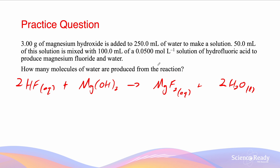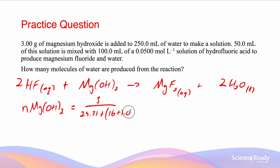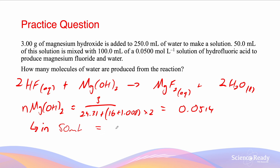We now try to identify our limiting reagent. For magnesium hydroxide we are given mass and volume, and our goal is to calculate how many moles are in the 50 millilitre solution. The number of moles of Mg(OH)₂ equals 3 divided by 24.31 plus (16 plus 1.008) times 2, which equals 0.0514 moles. Since we are only taking one-fifth of the 250 millilitre solution, the number of moles in 50 millilitres equals 0.0514 divided by 5, which equals 0.0103 moles.